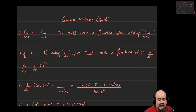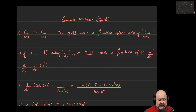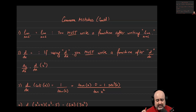You cannot just have a naked limit floating around — it cannot just be by itself. It has to be followed by a function. The function has to either be defined for you in the problem, or you need to list the function itself. So if the question just says find the limit of x squared plus 5x, you cannot say f of x here.